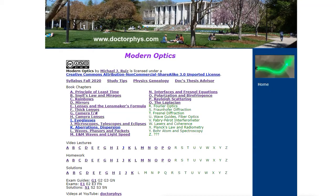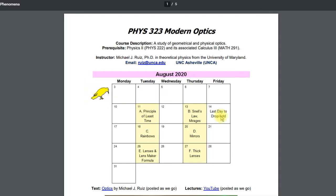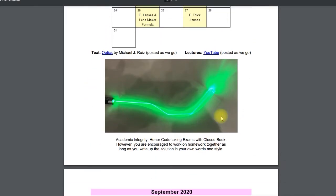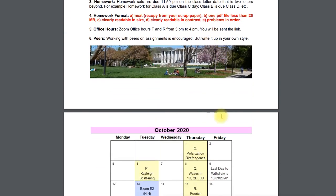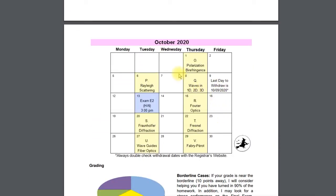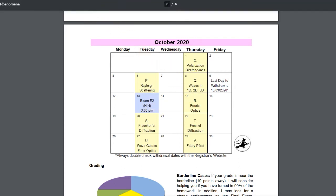We're going to do a review for the Modern Optics Exam 2. First, go to the syllabus and see what letters the exam will be on. We're here October 13th, Exam 2, H to N. So that's what we're going to look at — H to N.